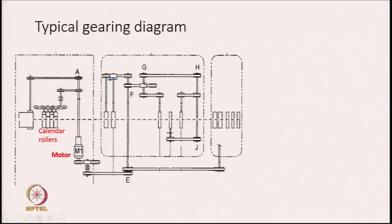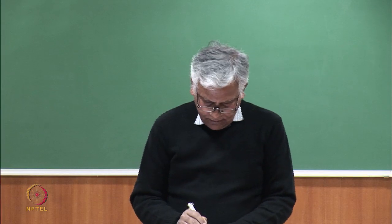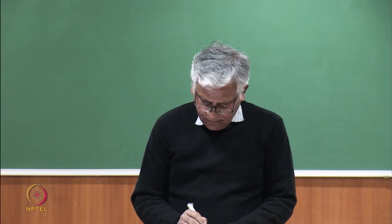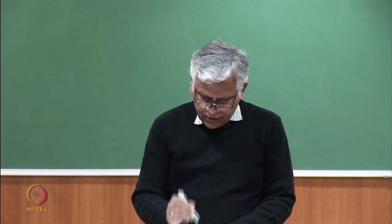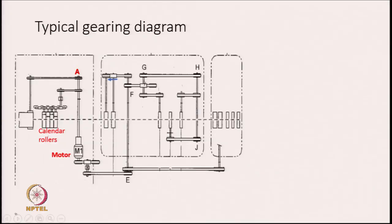There is one motor. There is a change pulley A, another change pulley G, another change pulley H, another change pulley F, and this is called bale pulley J.